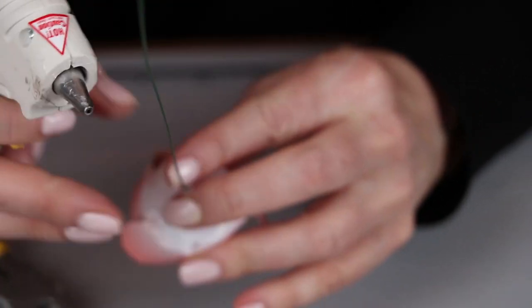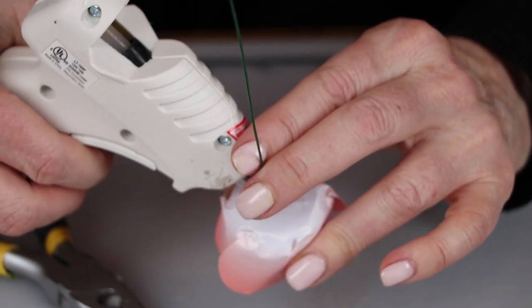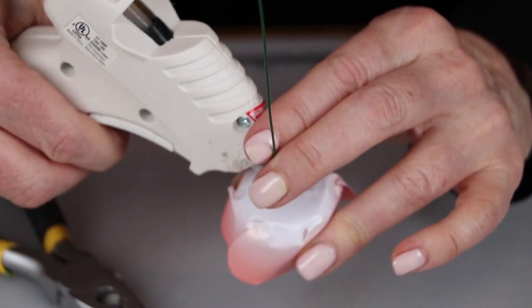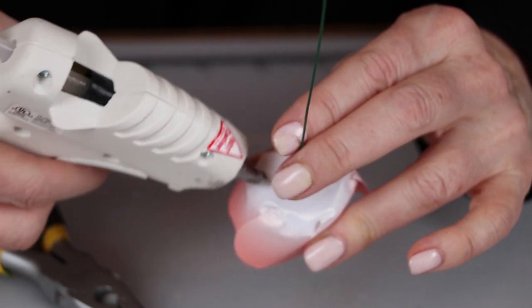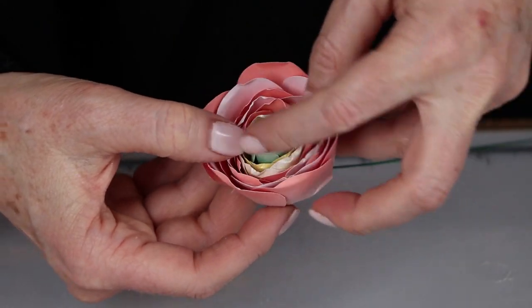Now we're going to cover this up with tape, and the back of the flower won't show, so you can add some glue to the back and just let that cool and that will hold it into place. Now gently open up the petals.